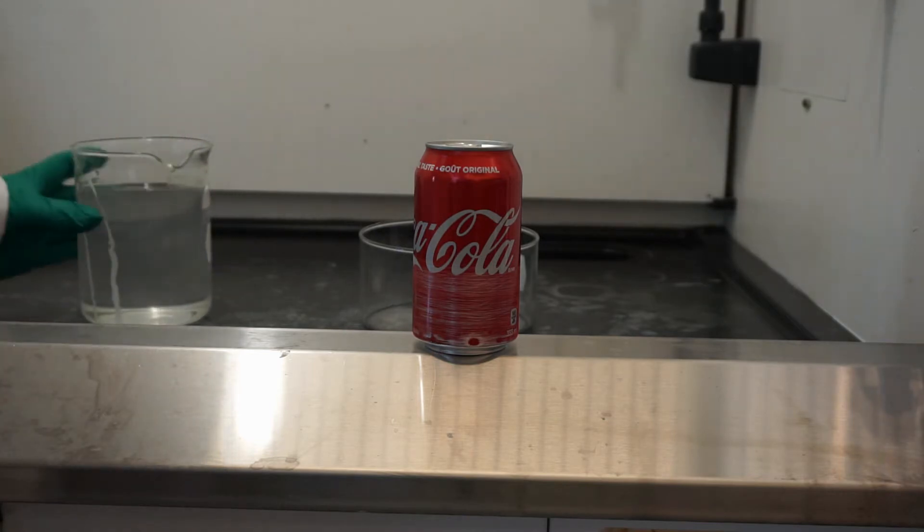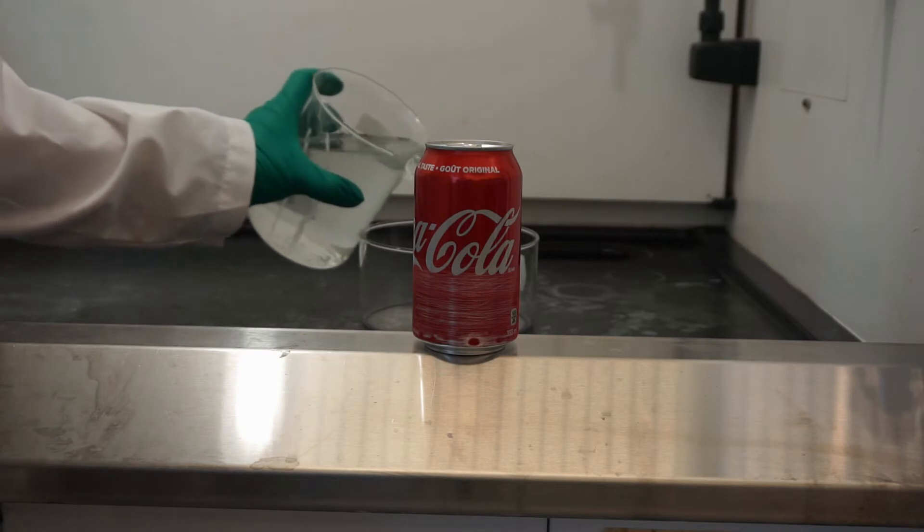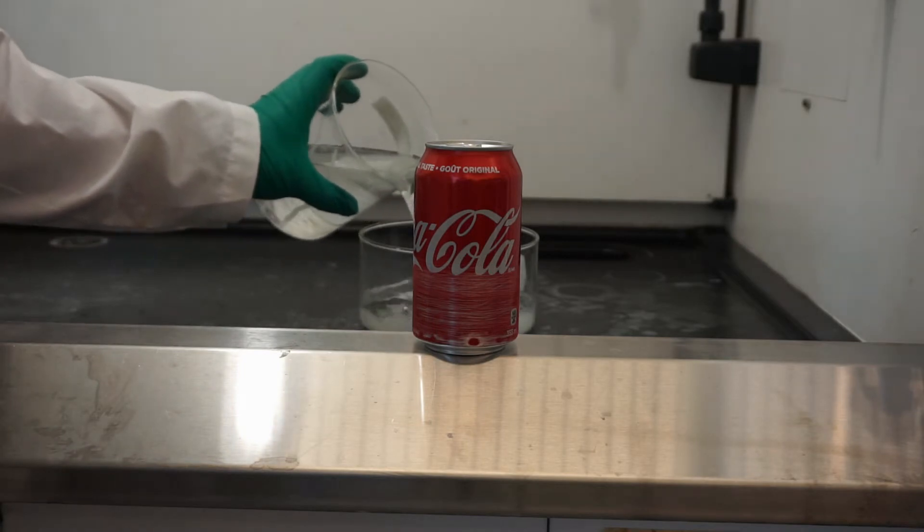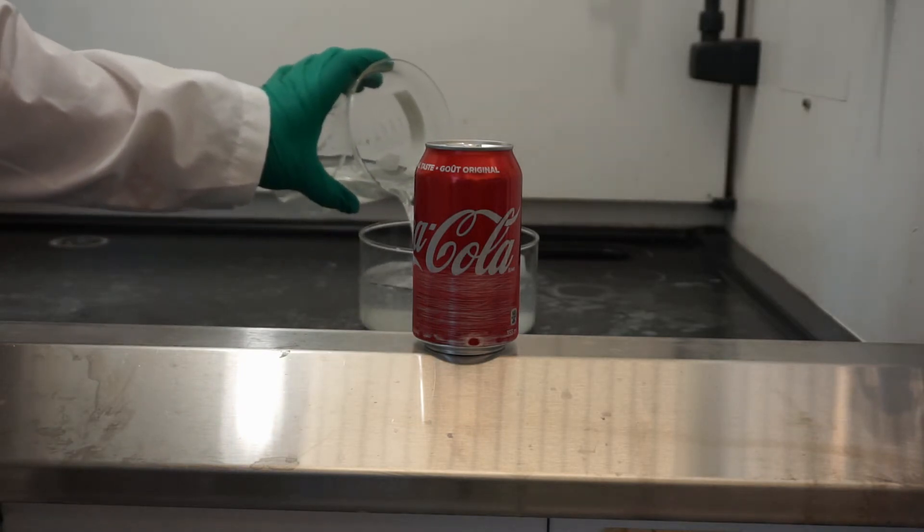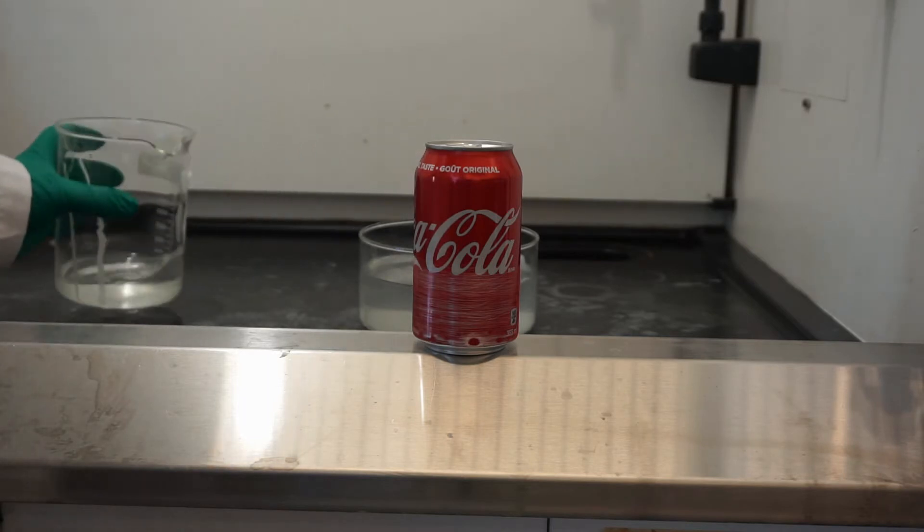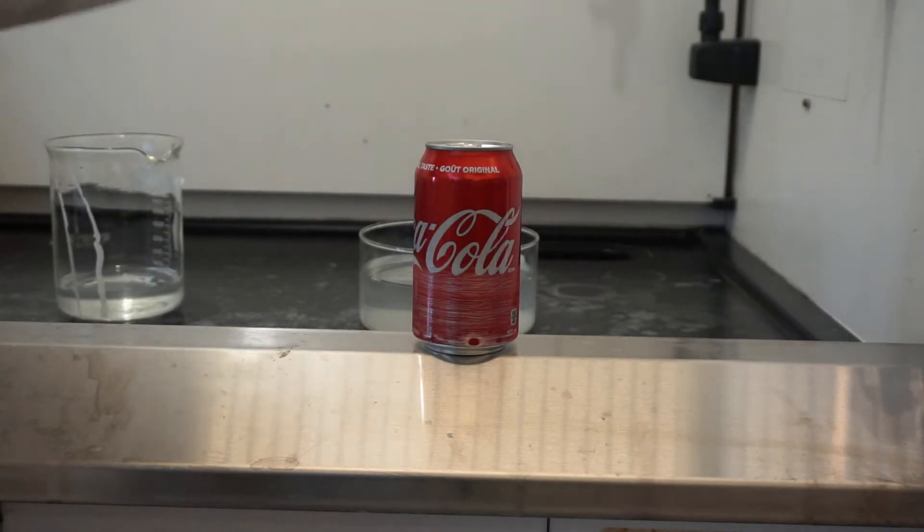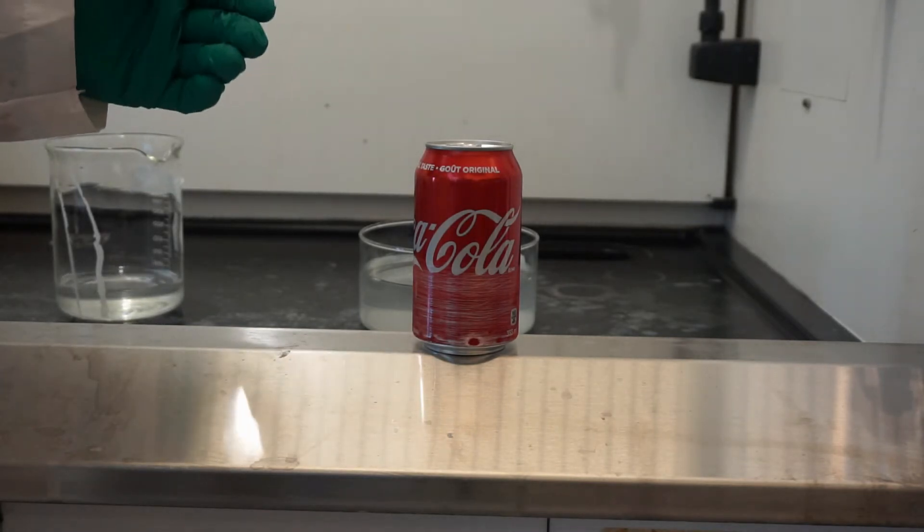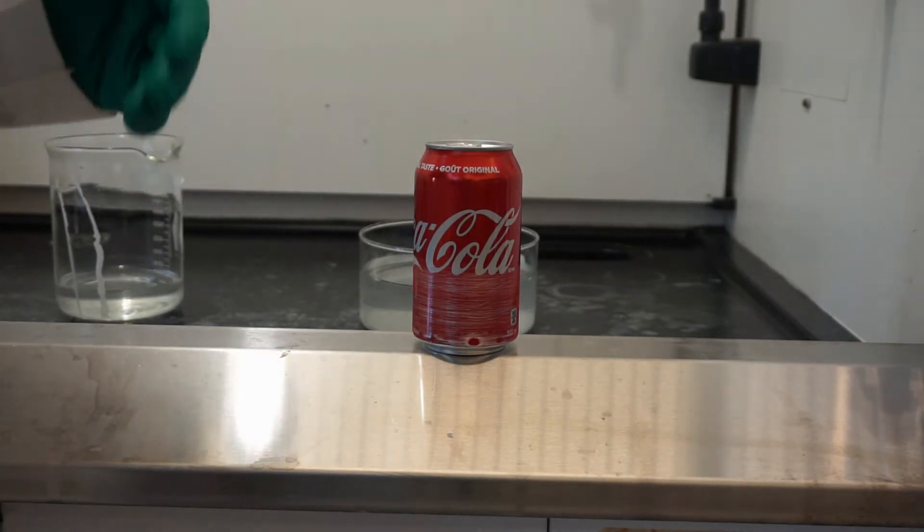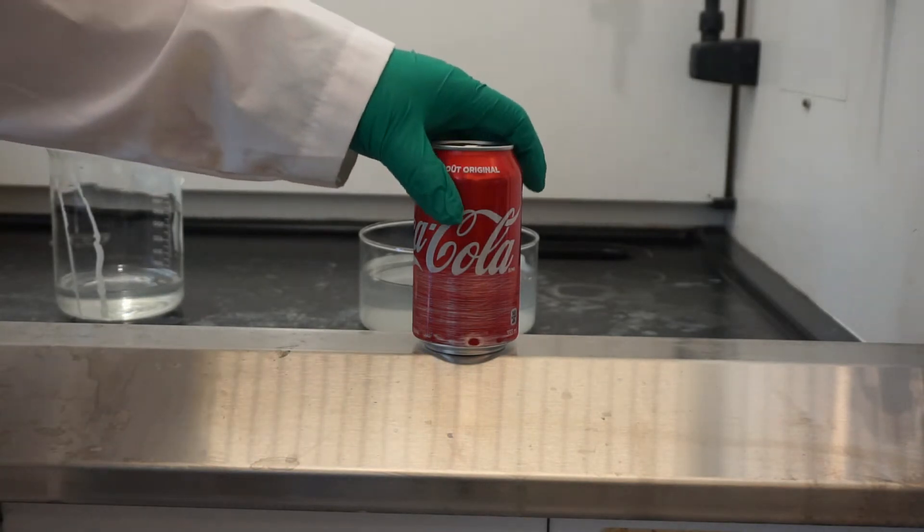Now that oxide layer is actually only stable under normal ambient conditions. If we put the aluminum into a fairly basic solution, which is what we have here, we will prevent that oxide from forming and see the reaction of water with aluminum.